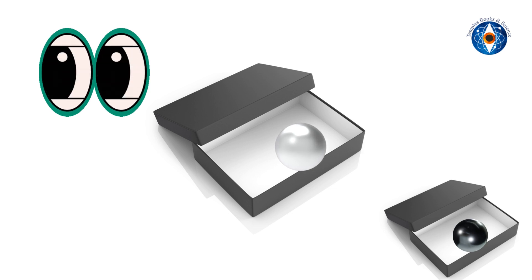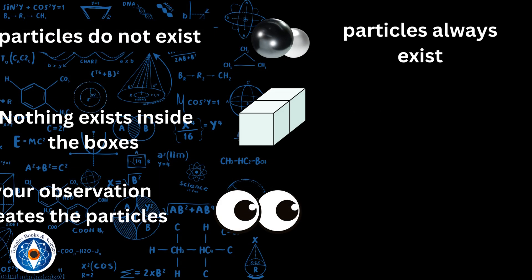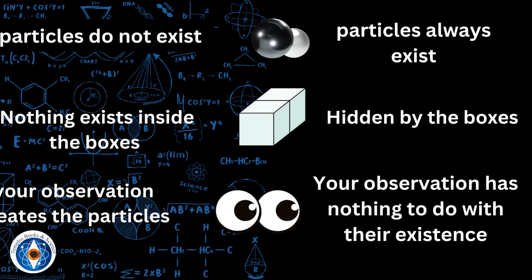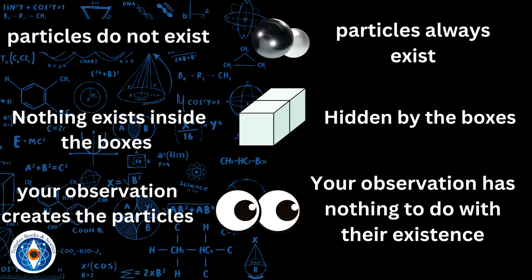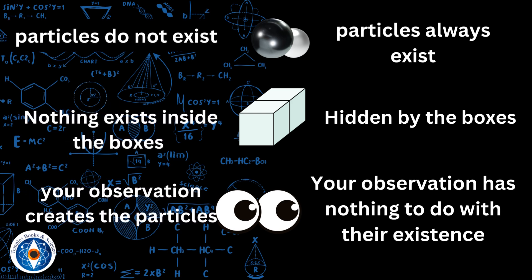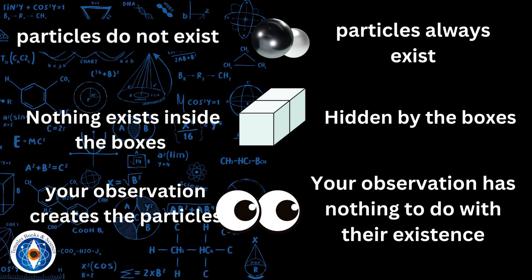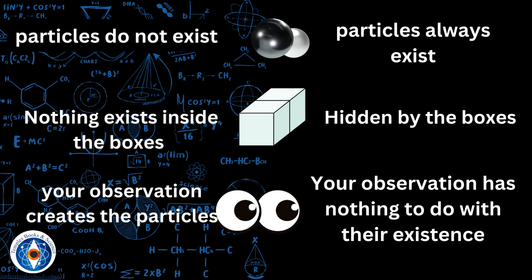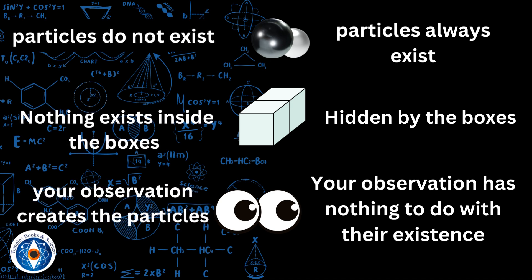You did not create the white ball or the black ball by observing it. Observing one ball simply provides you with information about the other one. That's it, there is no creation happening here. Let's summarize: quantum physics says that nothing exists inside the boxes until you observe them. It is your observation that creates the particles. Einstein says particles always exist, they never cease to exist. They are merely hidden by the boxes. When you observe them, you are peering through the boxes and seeing them. Your observation has nothing to do with their existence.